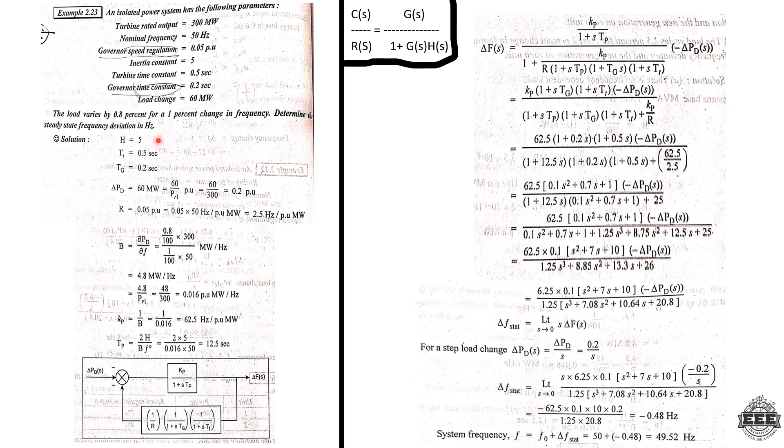The given parameters are: H, the inertia constant, is 5. The turbine time constant Tt is 0.5s. The governor time constant Tg is 0.2s. Delta Pd equals 60 megawatts — this is the load change.